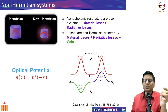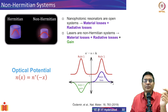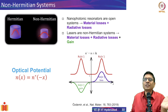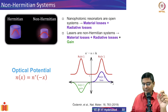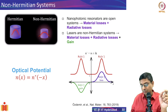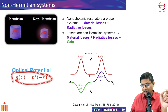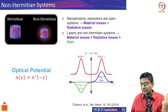We started looking at whether you can have lasing if you combine gain and loss nanostructures. There are some interesting properties that can be observed when you have a refractive index of a specific form — a refractive index as a function of position. Think of a photonic crystal consisting of various materials where the refractive index changes with position. The refractive index should equal its complex conjugate evaluated at minus x.